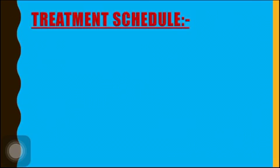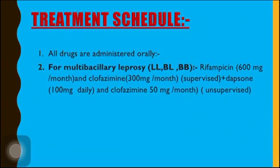All drugs are administered orally. For multi-bacillary leprosy (which includes lepromatous leprosy, BL, and BB borderline types), the supervised monthly regimen is: Rifampicin 600 mg once a month and Clofazimine 300 mg once a month, supervised by a doctor. The unsupervised daily regimen is: Dapsone 100 mg daily and Clofazimine 50 mg daily.